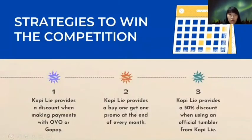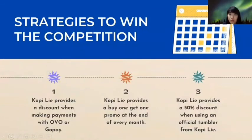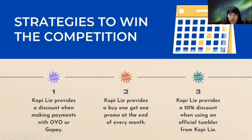Next, I will explain how Kopi Lee uses strategies to win the competition. There are three strategies. The first one is Kopi Lee provides a discount when making payments using OVO or GoPay. The second one is Kopi Lee provides a buy-one-get-one promo at the end of every month. The last one, Kopi Lee provides a 50 percent discount when using an official tumbler from Kopi Lee.